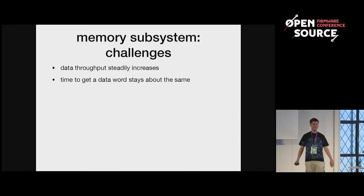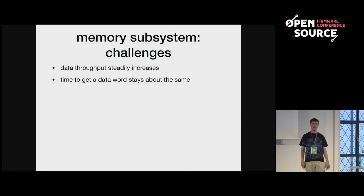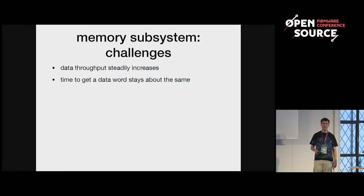Basically, the data throughput can be easily increased, but the time to get a certain data word to the processor stays about the same. Over the DDR2, DDR3, and DDR4 memory generations, there was only a very slight improvement in latency, but the throughput became much higher.